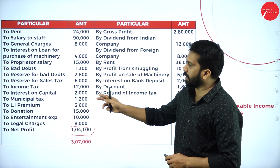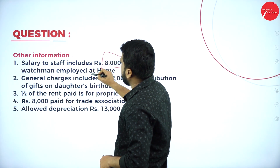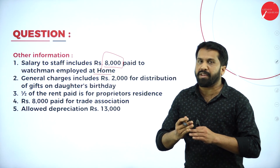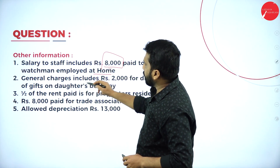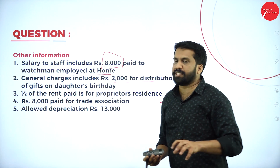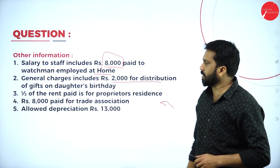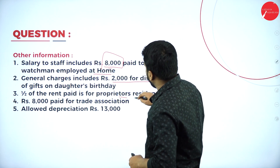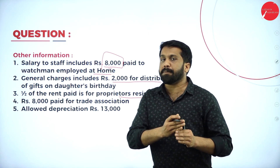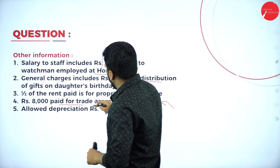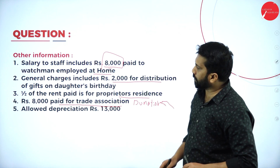Now for the adjustments: salary to staff includes ₹8,000 paid for a watchman employed at home, so we take ₹8,000 as it is not related to business. General charges include ₹2,000 for distribution of gifts — general charges are part of business, but take out this ₹2,000 as personal. Half the rent paid is for the proprietor's residence, so we consider the personal half.